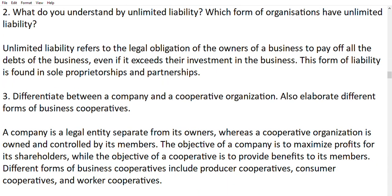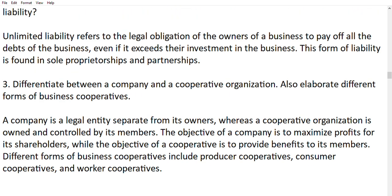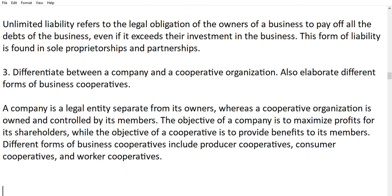Question 3: differentiate between a company and a cooperative organization, and elaborate different forms of business cooperatives. A company is a legal entity which is separate from its owners, whereas a cooperative organization is owned and controlled by its members. The objective of a company is to maximize profit for shareholders, while a cooperative aims to provide benefits to its members. Different forms of business cooperatives include producer cooperatives, consumer cooperatives, and worker cooperatives.